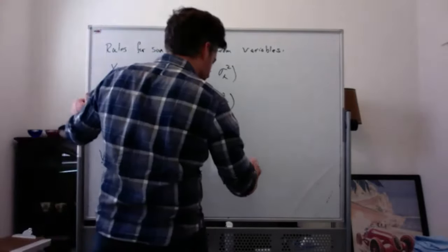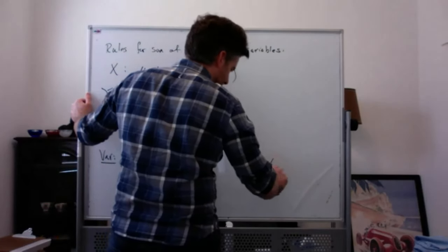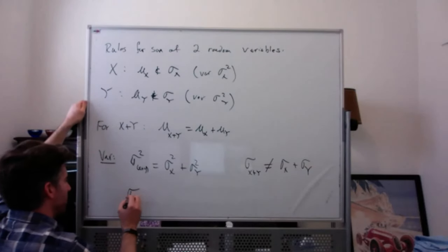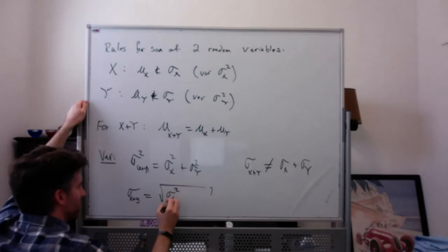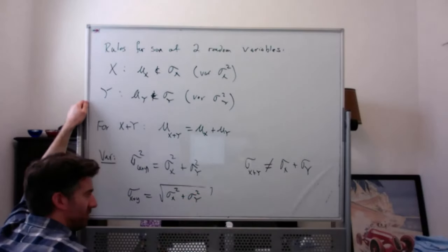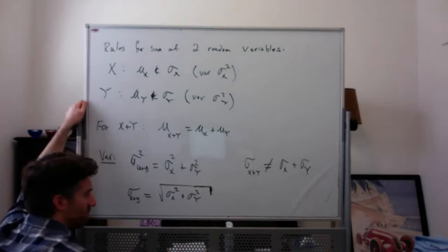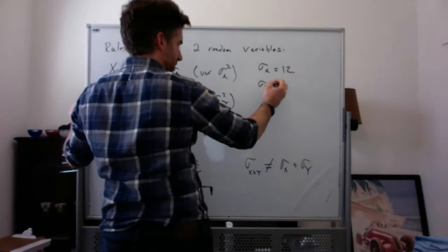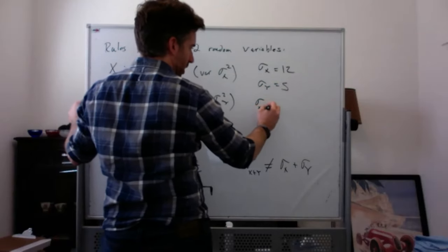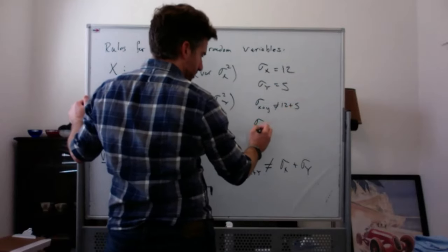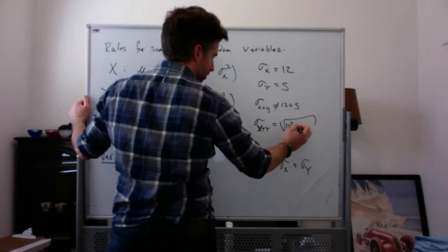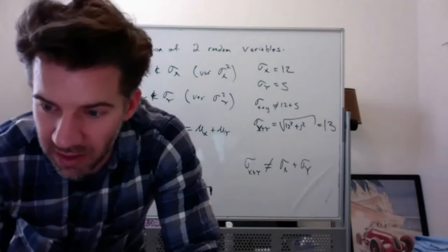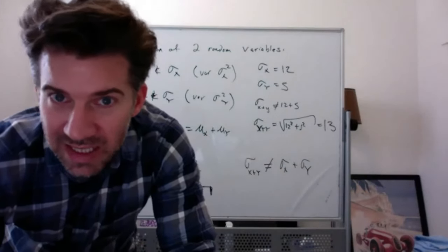For example, in a previous quiz the standard deviation for X was 12 and for Y was 5. The standard deviation for X+Y is not 12+5=17 — it's √(12²+5²) = √(144+25) = √169 = 13. This is a common mistake and definitely something that could be asked on a quiz.